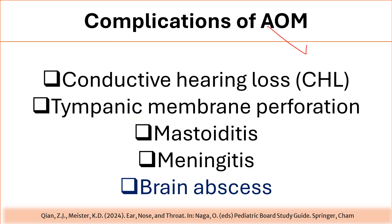Complications of acute otitis media include conductive hearing loss, which is very common, and tympanic membrane perforation, which is also common. Less common but serious complications include mastoiditis, meningitis, and rarely brain abscess.